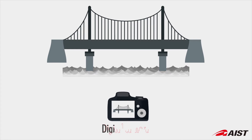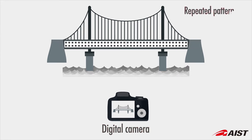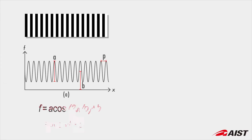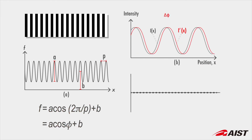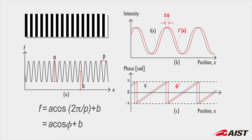First, capture the pattern of the structure surface from a distance. The intensity or brightness values of the grating pattern in the image contain information of the phase of the pattern, represented by phi, and phase difference occurs when the object has deformation.